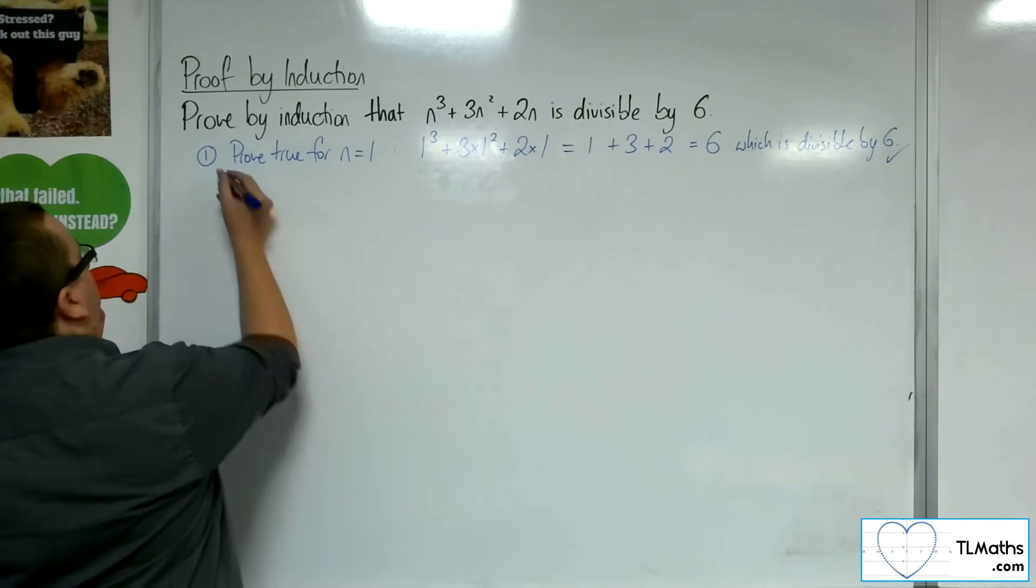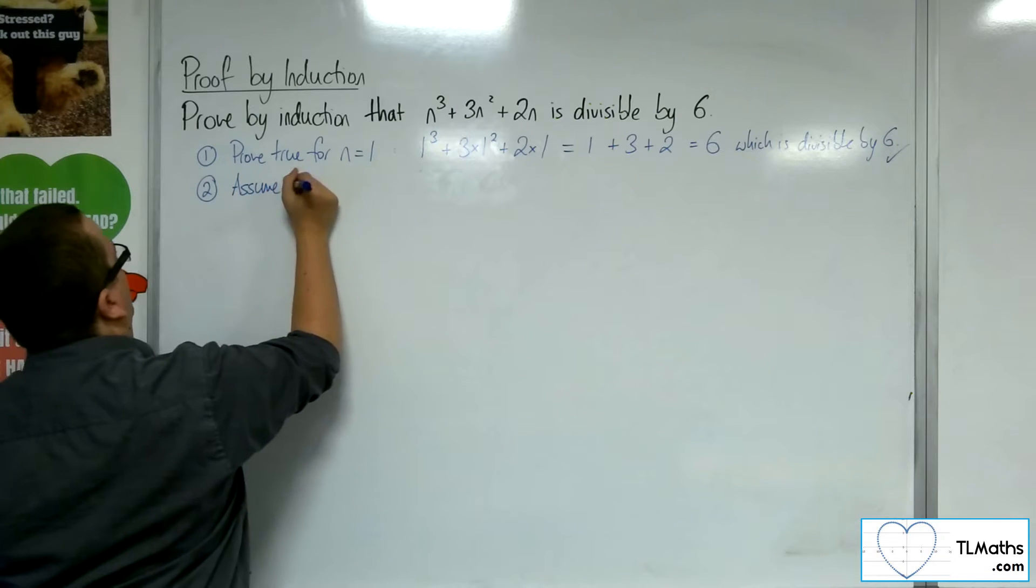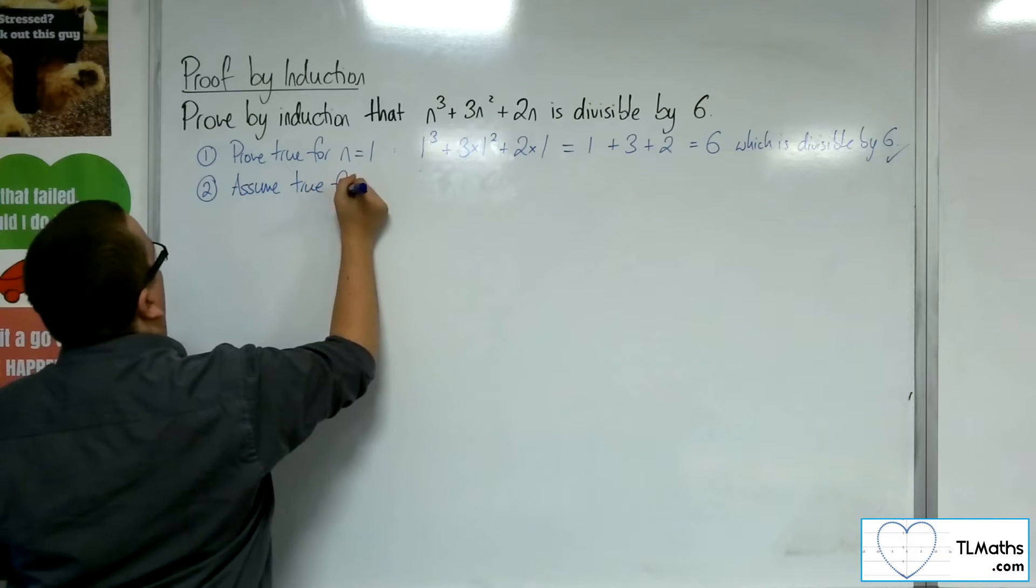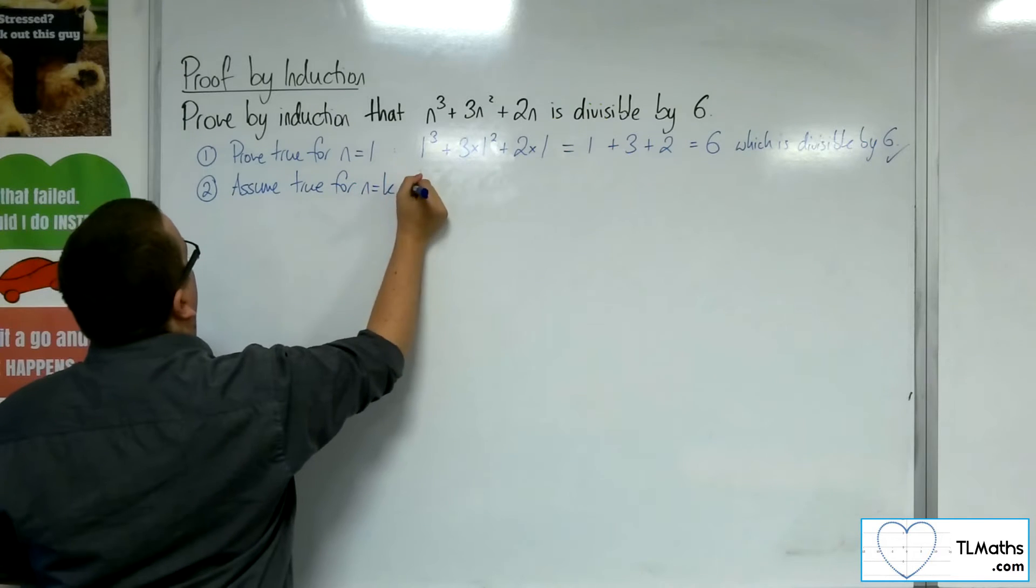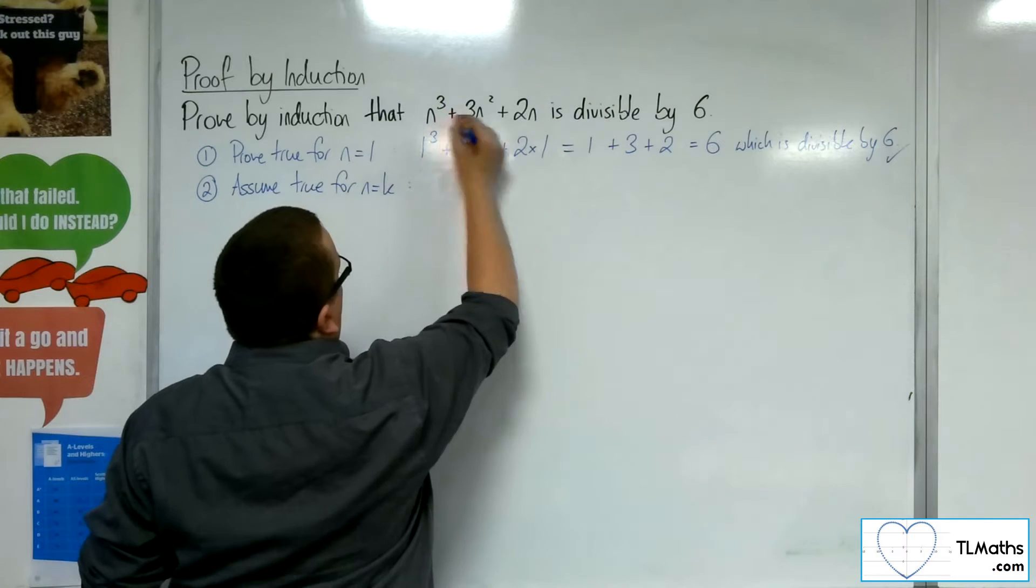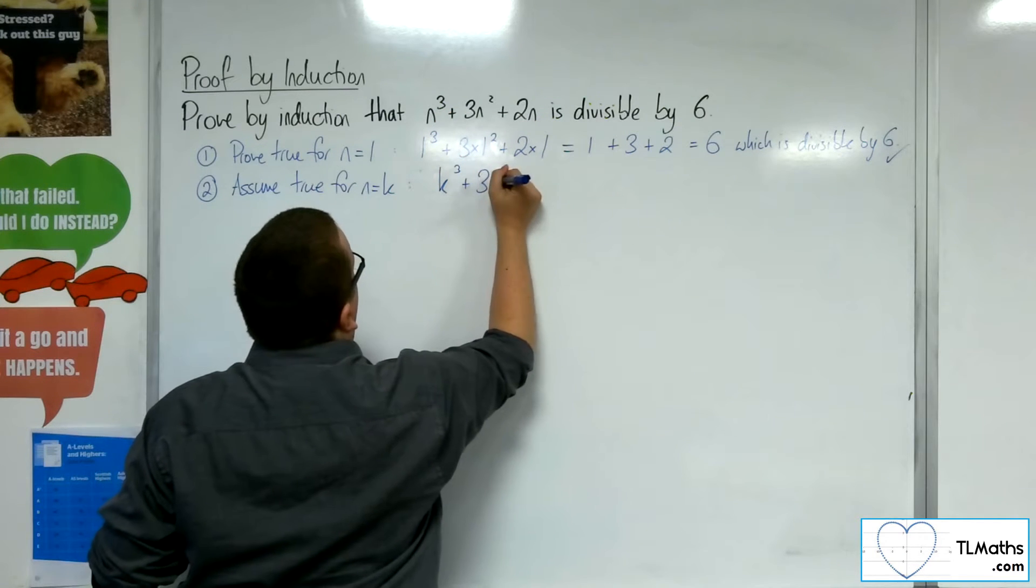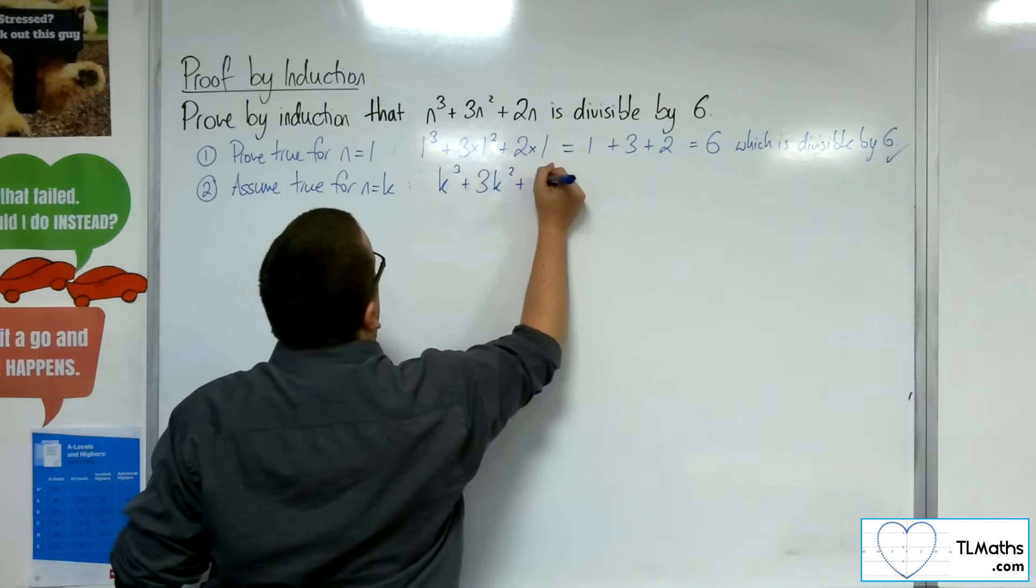Now, we assume true for n equals k. So, in order to do that, I substitute the n for k. So, I'm going to have k cubed plus 3k squared plus 2k.